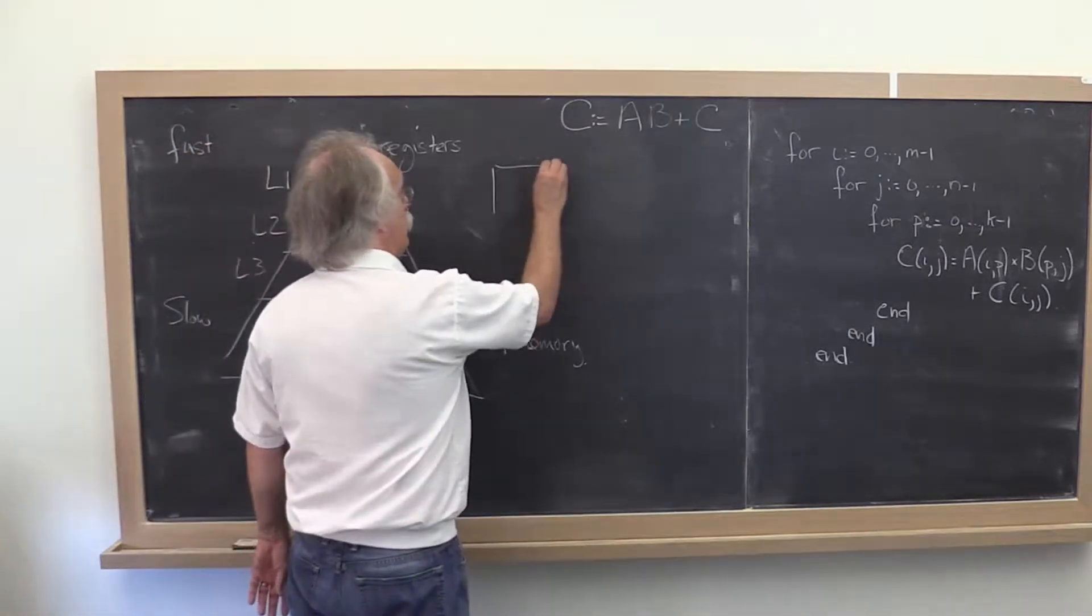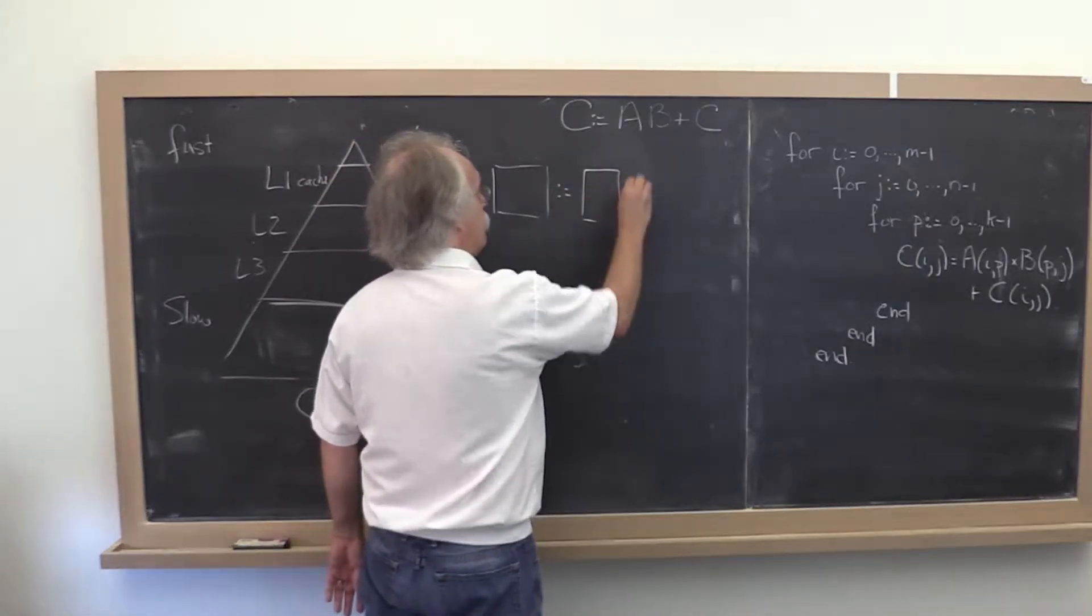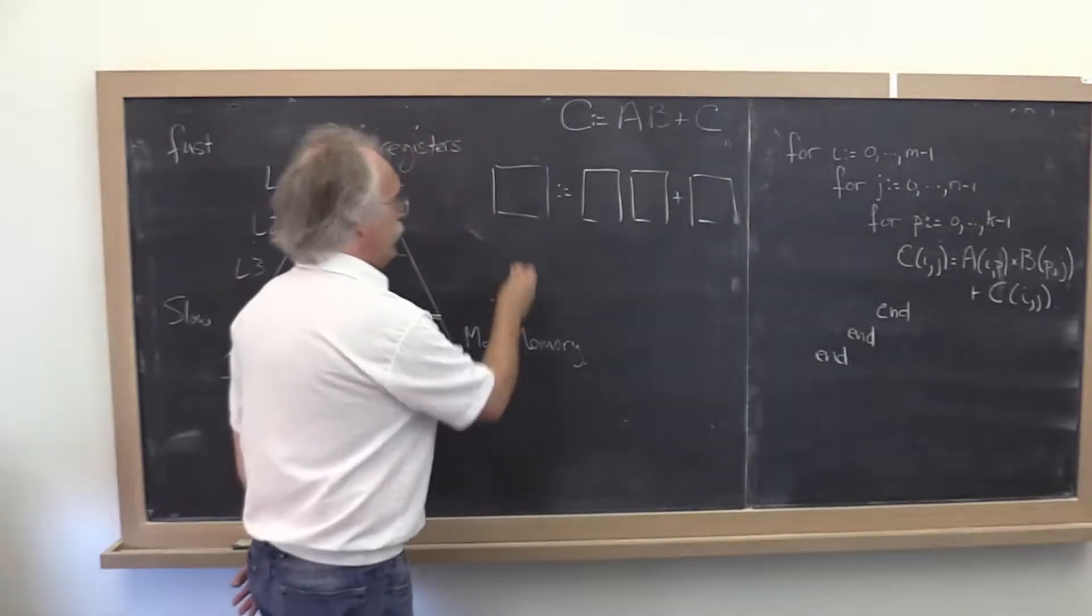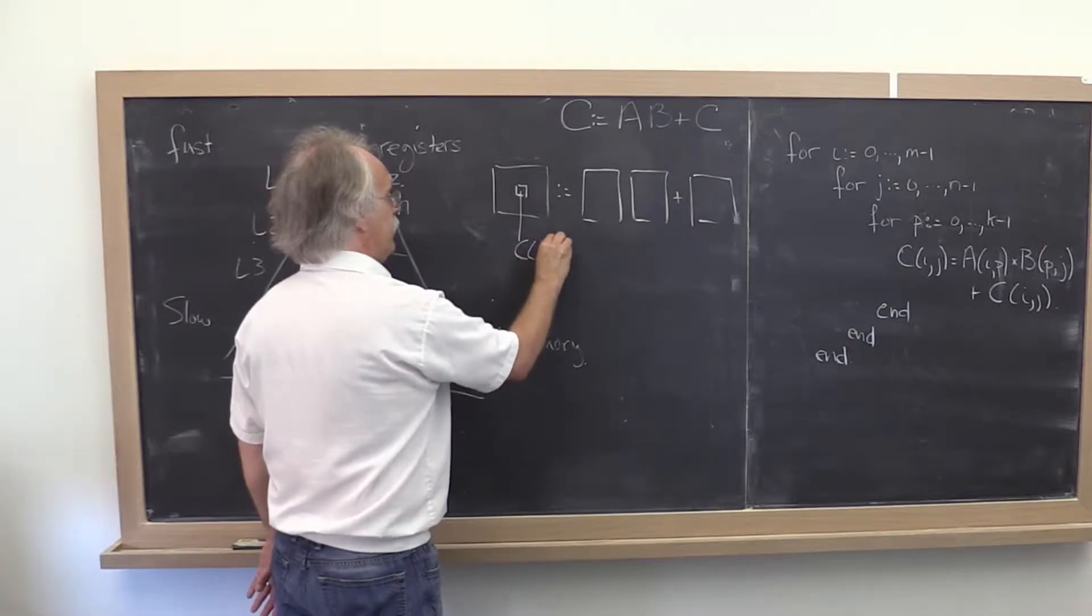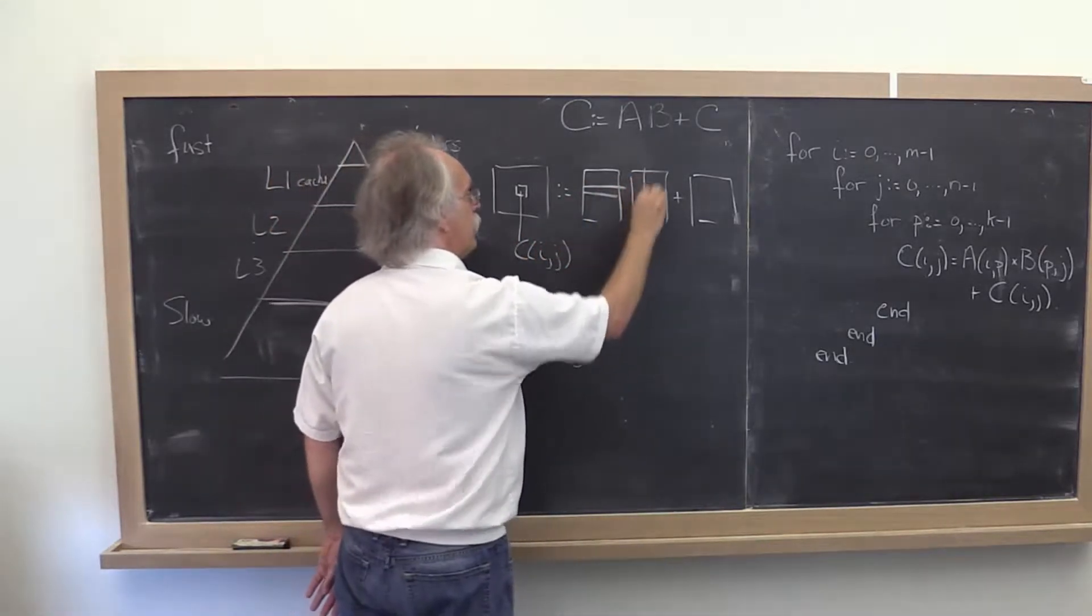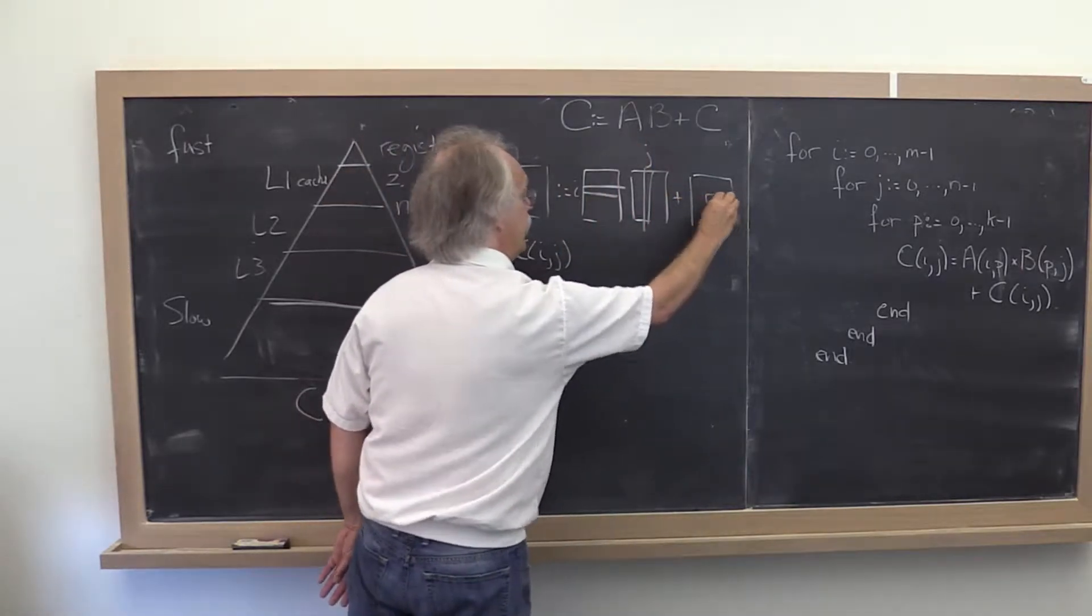We're computing C equals A times B plus C. If you look at a typical entry here, the ij entry in C, that is equal to the dot product of the ith row with the jth column added to that entry.